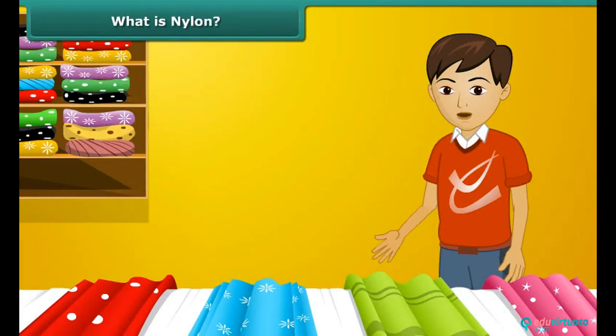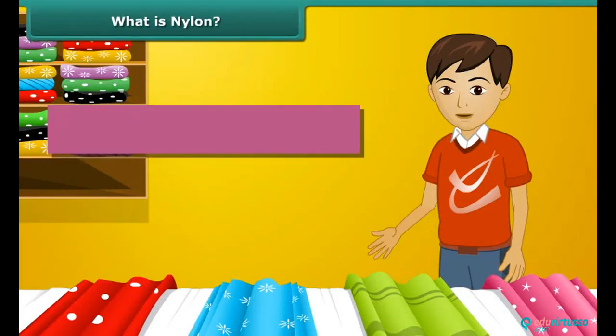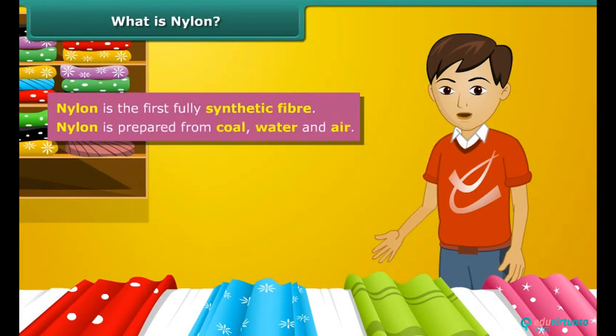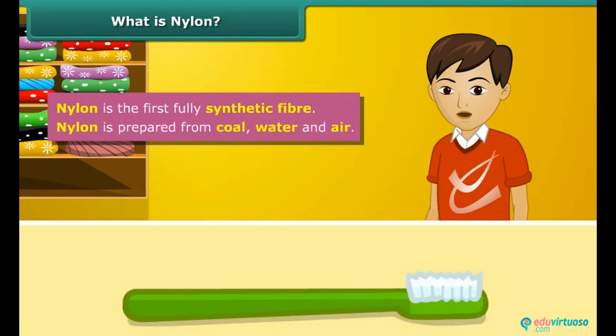Rayon can also be mixed with cotton to make bedsheets or mixed with wool to make carpets. Do you know what is the first fully synthetic fiber? It is nylon. The very first nylon product was a toothbrush with bristles.